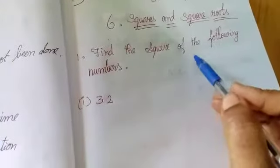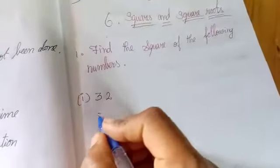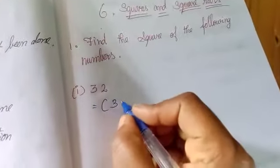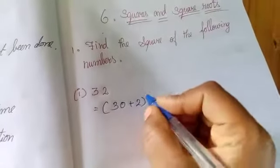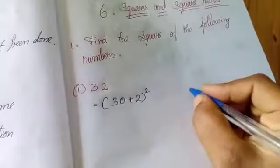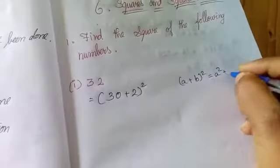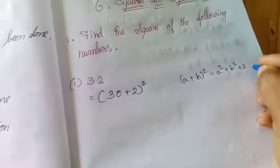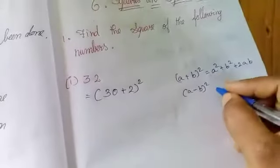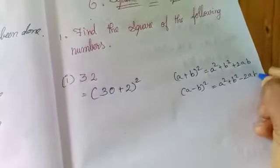Find the square of the following numbers. We will use an easy method to find the square. We write 32 as 30 plus 2, then apply the formula: (a + b)² = a² + b² + 2ab. Similarly, (a - b)² = a² + b² - 2ab.